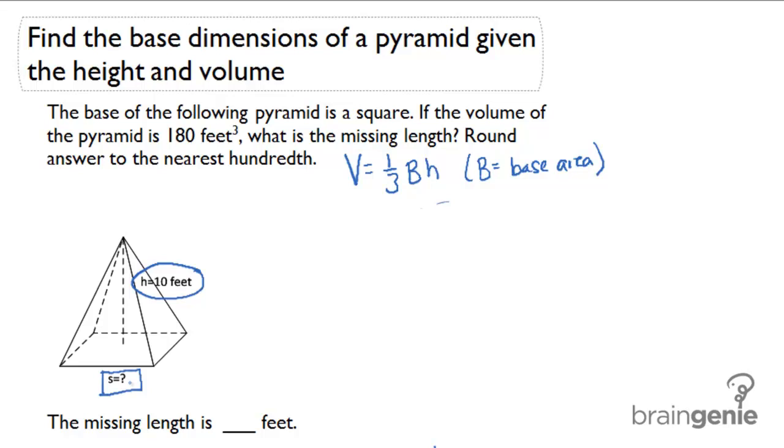So let's first set up our problem and figure out what the base area has to be. In this problem we would have 180 equals one-third times capital B, the base area which we do not know, times the height which is 10. I would solve this and get the base area equals 54 square feet.